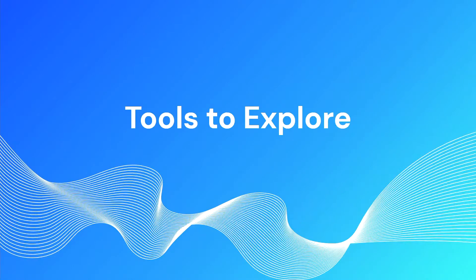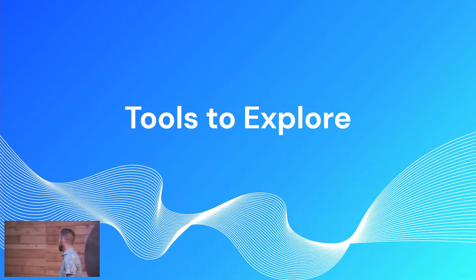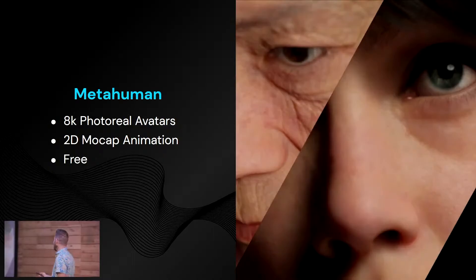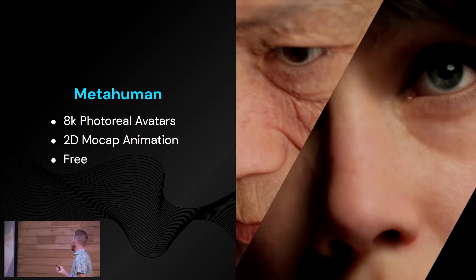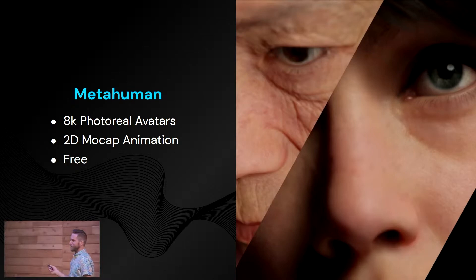But let's talk about some tools that are a little bit more accessible and you might actually use this year or in the near future. The first one is MetaHuman. These are 8K photoreal avatars. I think we're going to see these in commercials really soon — probably this year you'll start to notice them around. If they're lit correctly, they're pretty indistinguishable from a real person.